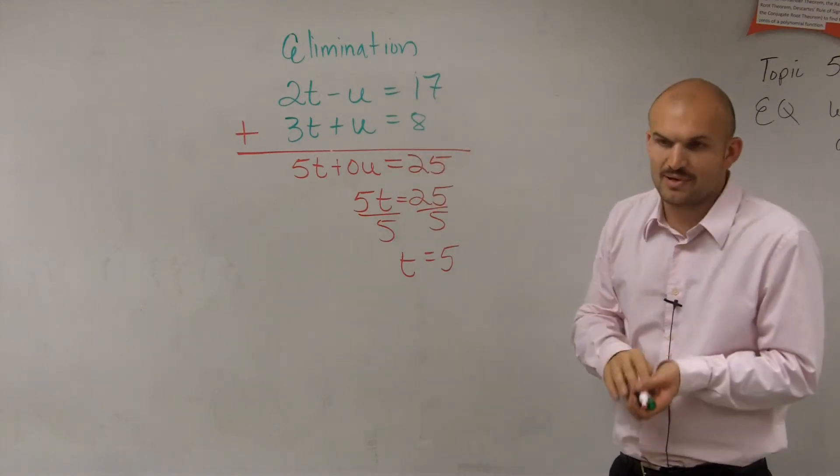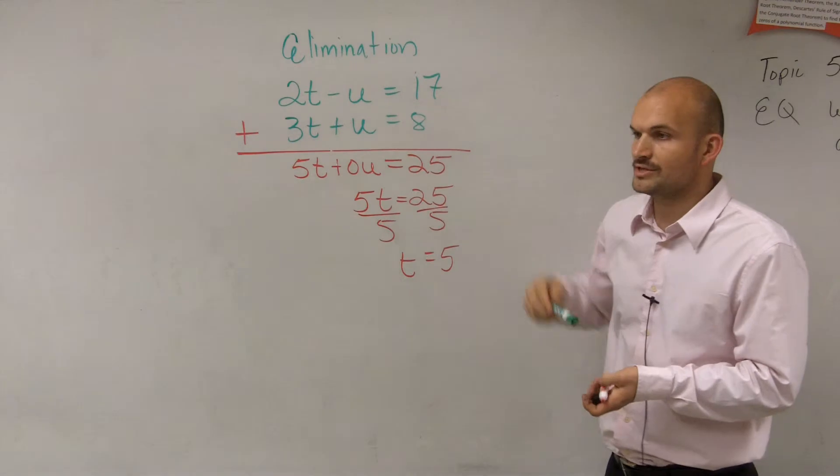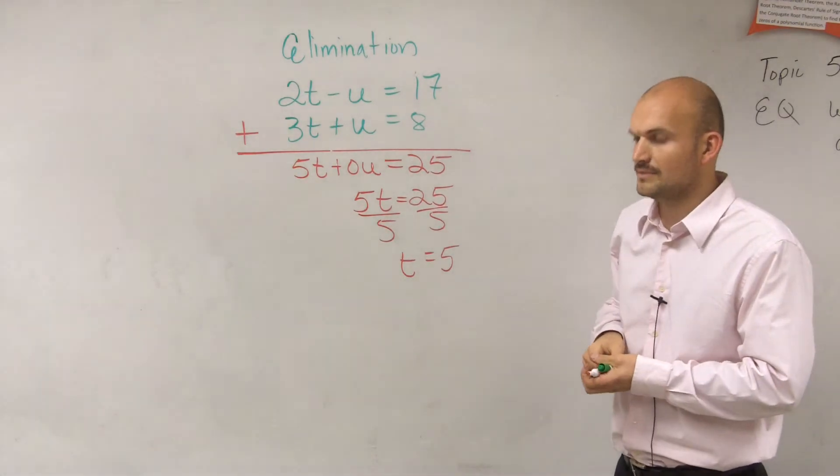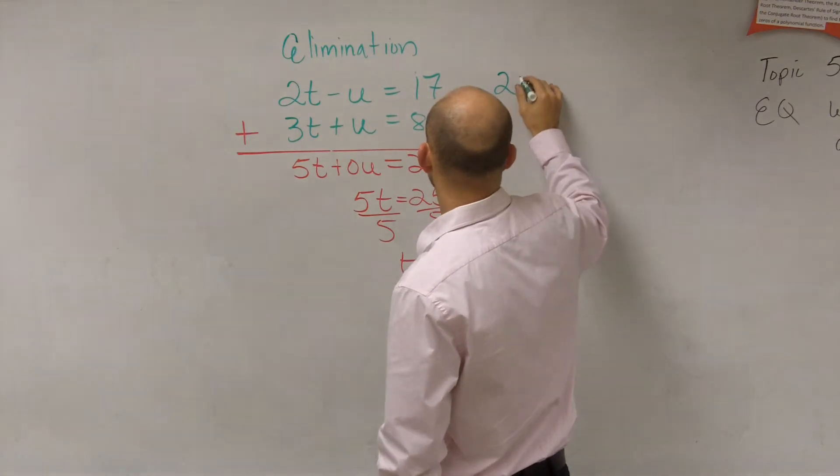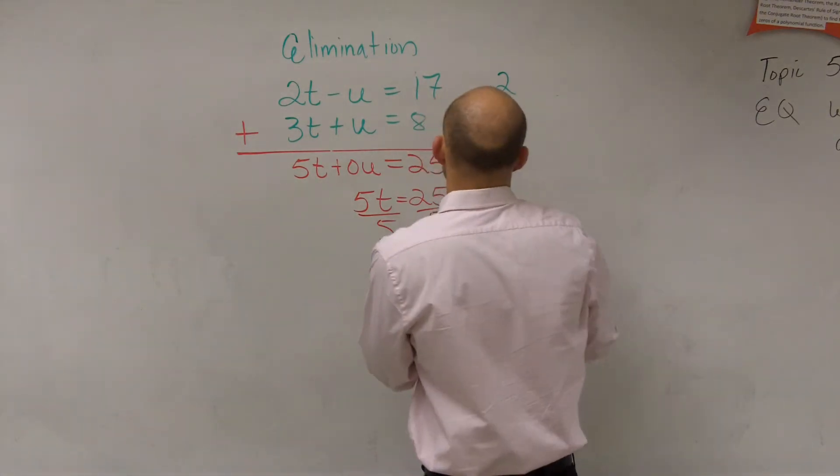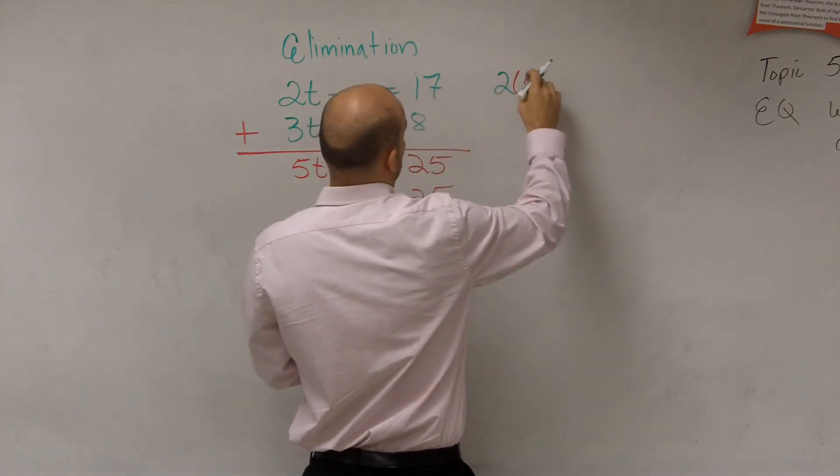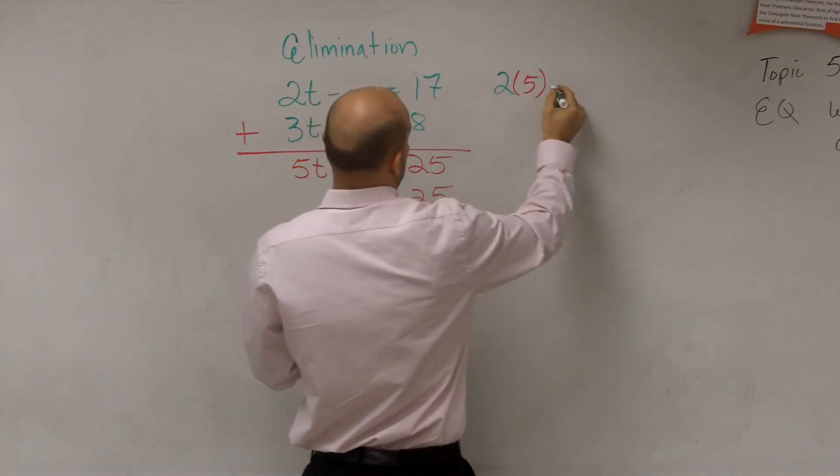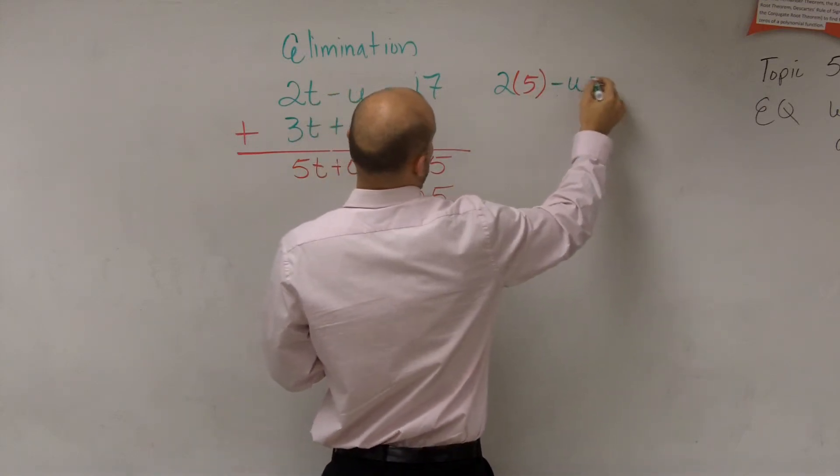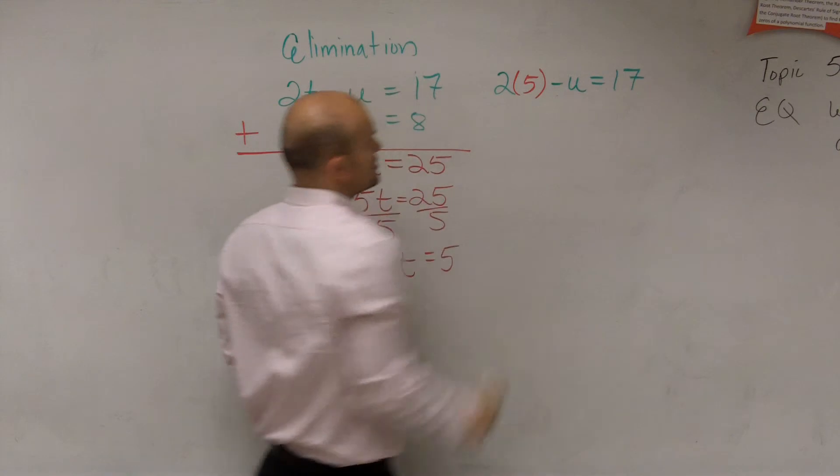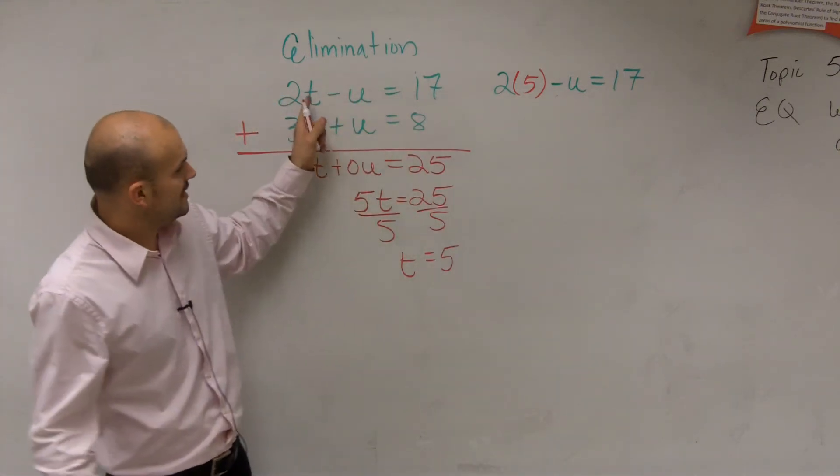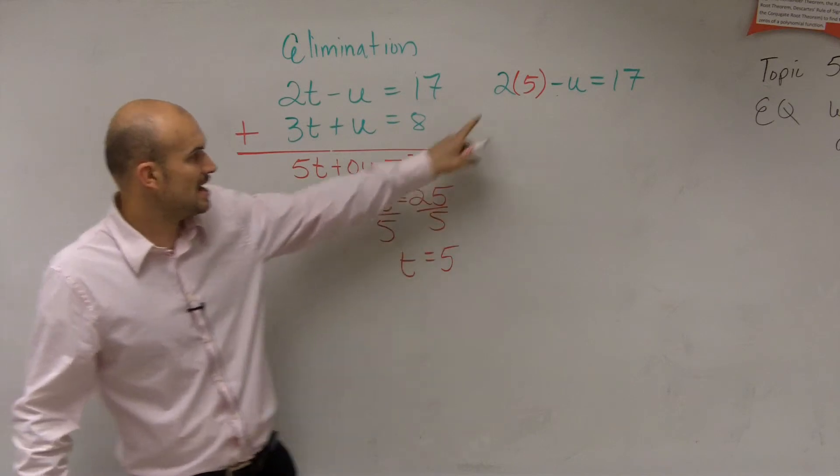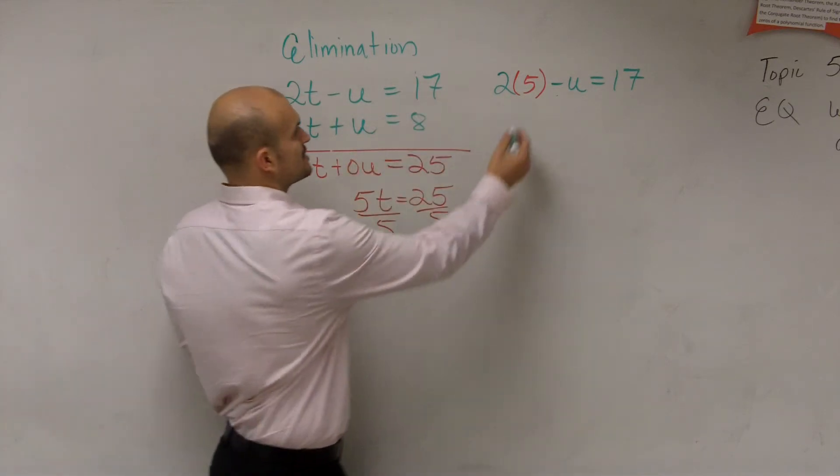But again, you just have to pick which one you want to do. So Austin, which one do you want to plug it into? The top equation or the bottom one? Top. Well, we've got to figure out the value of u. Remember, we've got to figure out the value of u and of t. So Austin wanted to put it into the top one, so that's fine. t is equal to 5, so I put a 5 in for t.